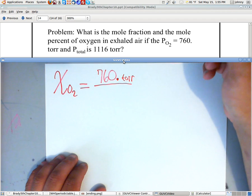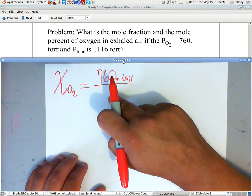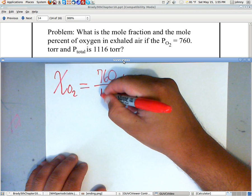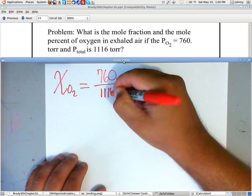And they tell us the total, which the total is going to go on the bottom, is 1,116 torr as well.